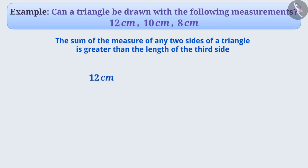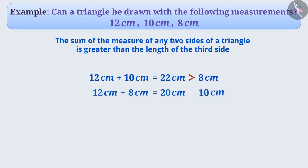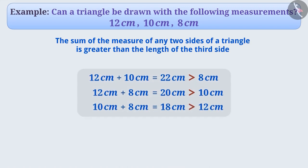If we add 12 cm and 10 cm, the result obtained is 22 cm, which is greater than 8 cm. If we add 12 cm and 8 cm, the result obtained is 20 cm, which is greater than 10 cm. Similarly, if we add 10 cm and 8 cm, the result obtained is 18 cm, which is greater than 12 cm. By looking at these three conditions, we can say that on the basis of the given measures, we can form a triangle.